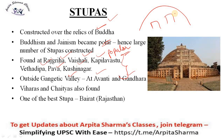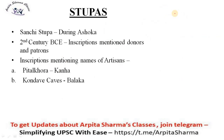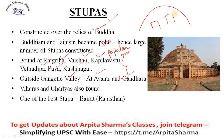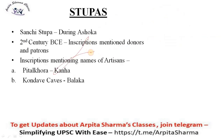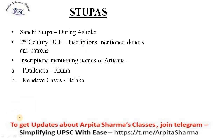One of the best stupas is located at Bairat, Rajasthan, also known as Viratnagar. The Sanchi stupa at Madhya Pradesh is one of the most famous stupas; it was built during the 2nd century BCE during the rule of Ashoka, and inscriptions also mention the same. Inscriptions on stupas also mentioned the names of artisans who made them — for example, Kanha was the artisan of Pitalkora caves, and Kondawa's artisan is similarly recorded.